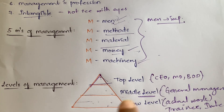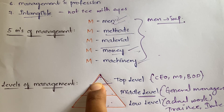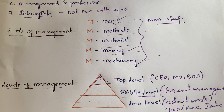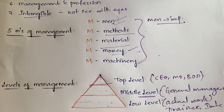To summarize the levels: top level plans, middle level communicates, and the low level does the actual work. The low level has the most people because many hands are needed to execute work. Top level has the fewest, as planning is done by a small group of intellectuals.